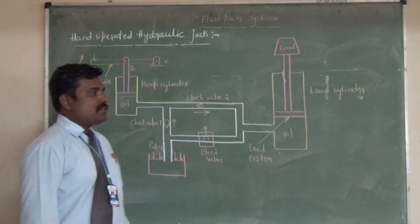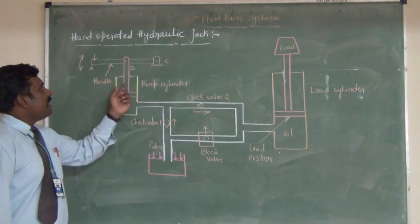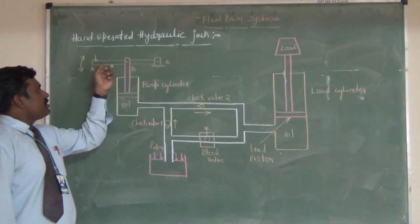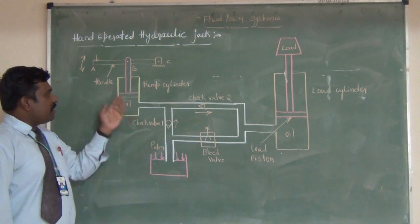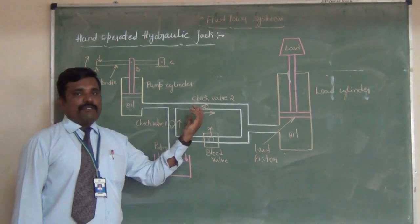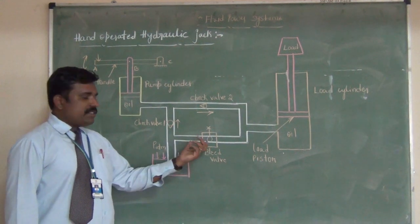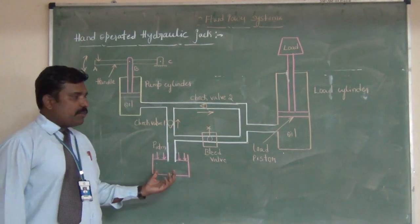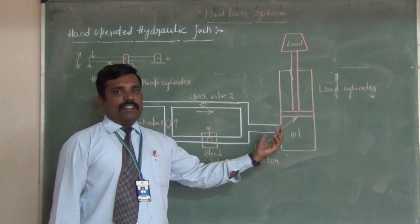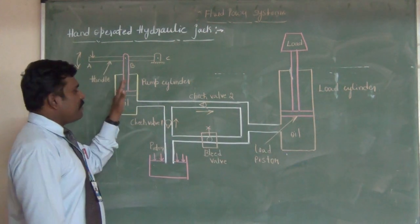This pump cylinder system is attached to the hand lever. We have two check valves here: check valve one and check valve two. Along with that, we are using the bleeder valve and we have the reservoir tank and the load cylinder. The two cylinders - the smaller side and the bigger side.